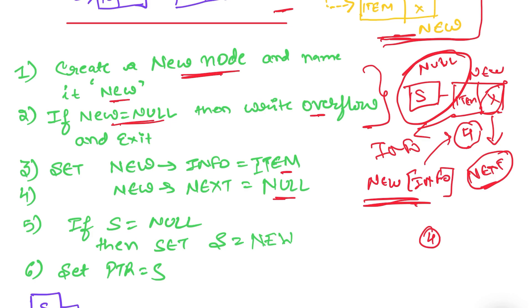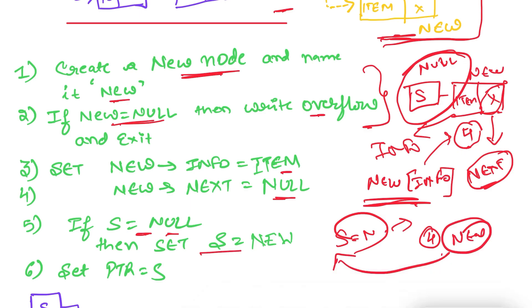If s is equal to null, only then this condition is met — it means I have no node in the linked list. Then we set s equal to new: we set s equal to the address of the new node. So this relationship is established — s will be equal to, let's say, 4, and it will be containing that address. This was the first condition where the whole linked list was empty.